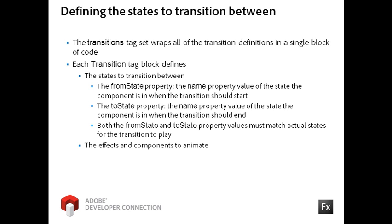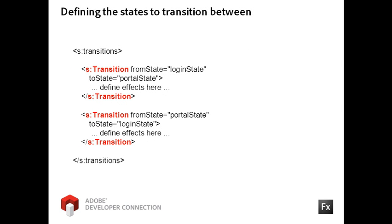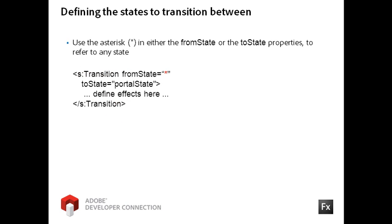Each transition instance also defines the effects and components to animate. The first transition block declares that the animation should only run if the application is moving from the login state to the portal state. The second transition says the opposite — its defined effects should only run if the application is moving from the portal state to the login state. Note that you can refer to any state by using the asterisk in the from state or to state properties of the transition instance.